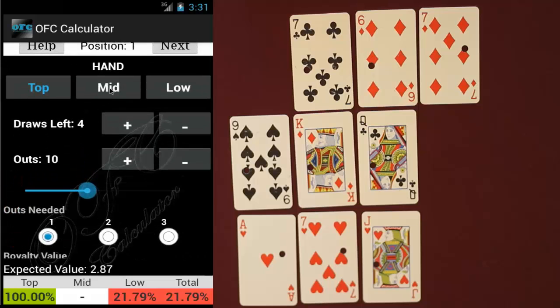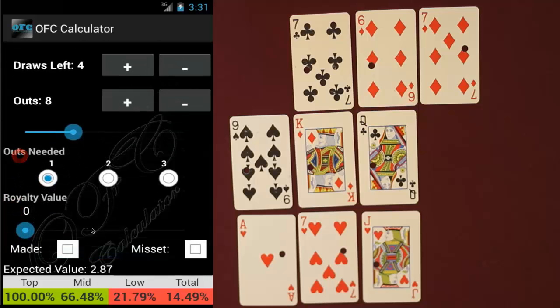Next click the mid tab and what we're going to do is calculate the odds of us miss setting. So what we're going to do is change the outs to eight because our opponent has one of the nines so we have three kings, three queens and two nines for a total number of eight outs. Our outs needed is just one because we just need to hit one of these three cards to keep from miss setting. Then what we're going to do is click the miss set check box. Basically what this check box means is that if you don't hit whatever inputs you have on the screen for this hand you will miss set the hand. So that 66% down there shows us our chances of not miss setting. So this basically means that there's a one in three chance that we miss set and as you can see that also affects our EV value down at the bottom left.